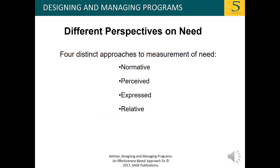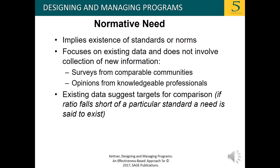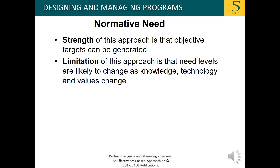We define four distinct approaches to the measurement of need: normative, perceived, expressed, and relative. Normative need implies the existence of standards or norms, focuses on existing data, and does not involve collection of new information — such as surveys from comparable communities or opinions from knowledgeable professionals. If the ratio falls short of a particular standard, a need is said to exist. The strength of this approach is that objective targets can be generated, but a limitation is that need levels are likely to change as knowledge, technology, and values change — making it an ever-changing target.